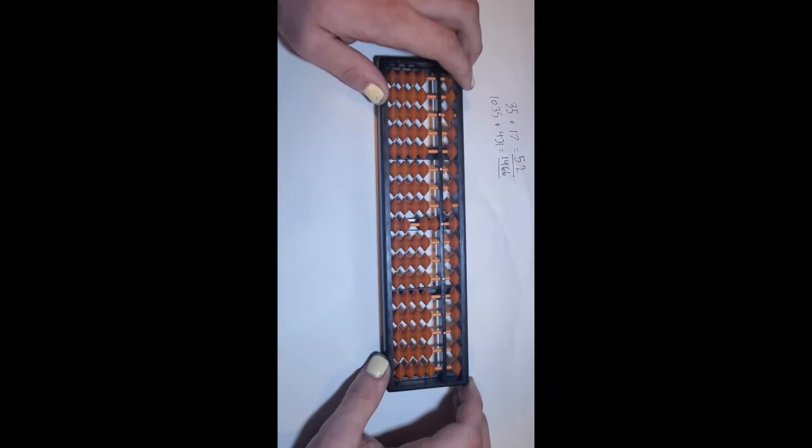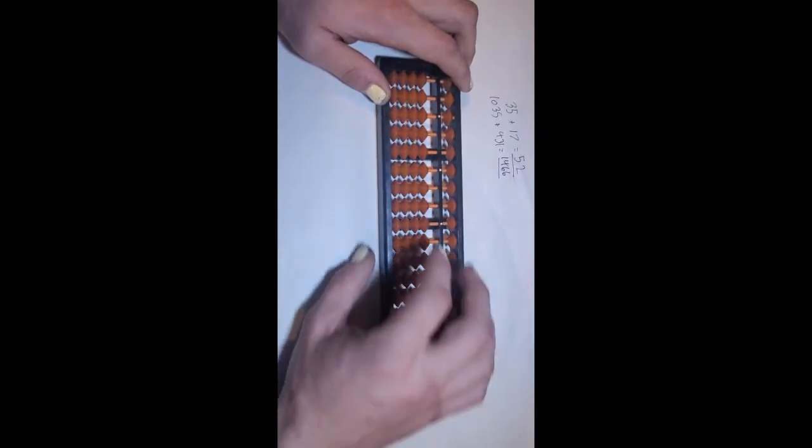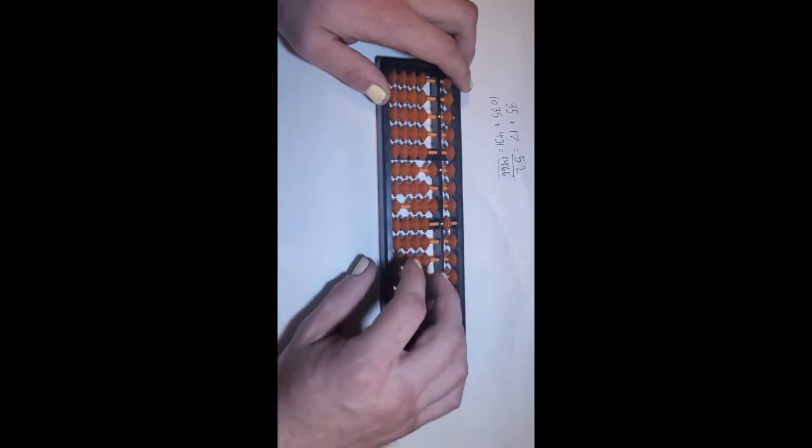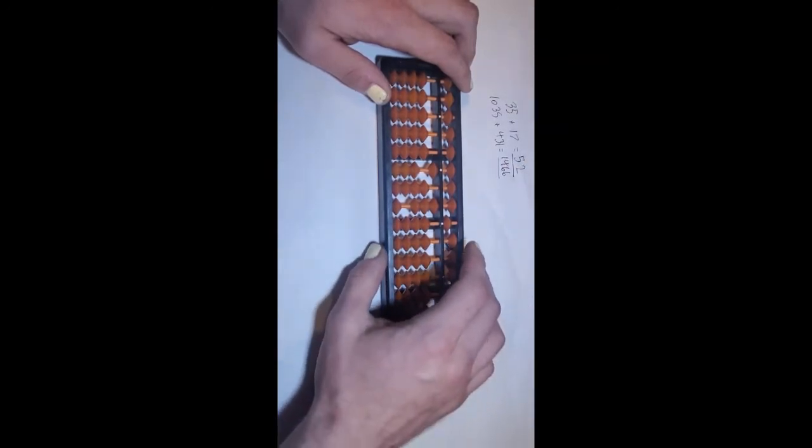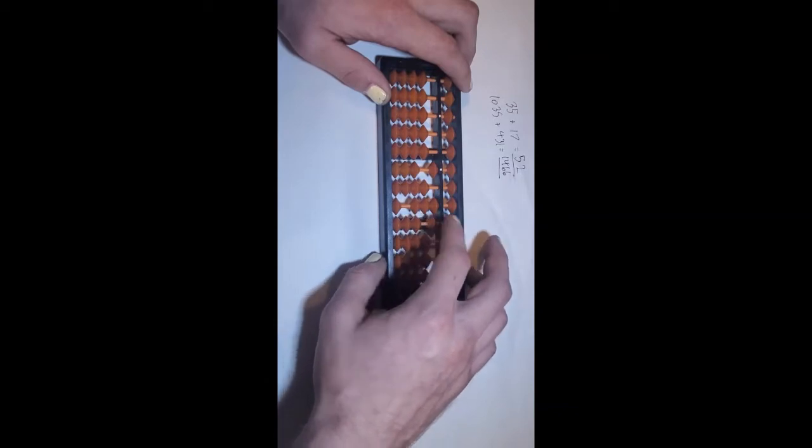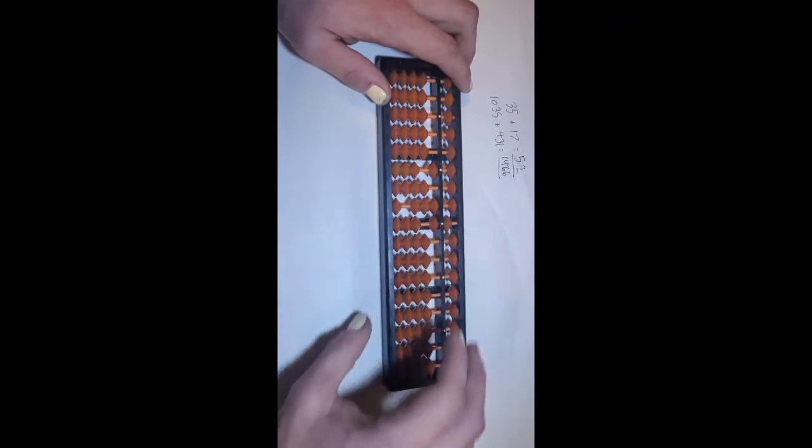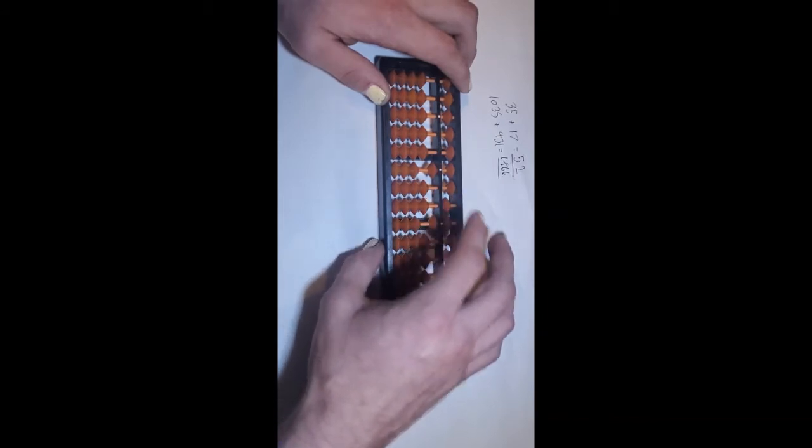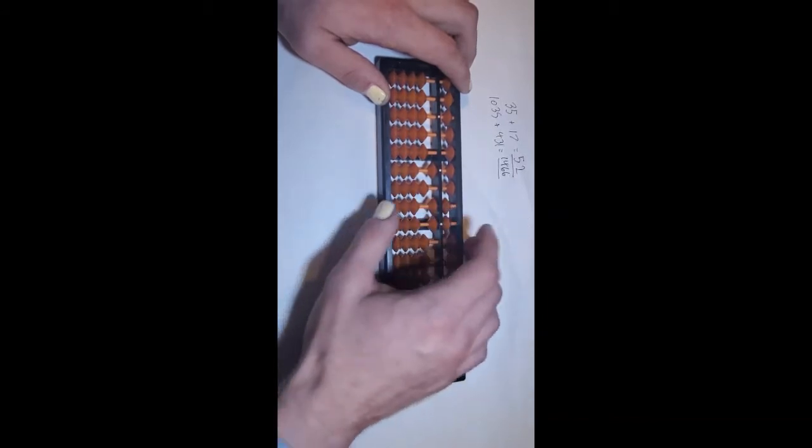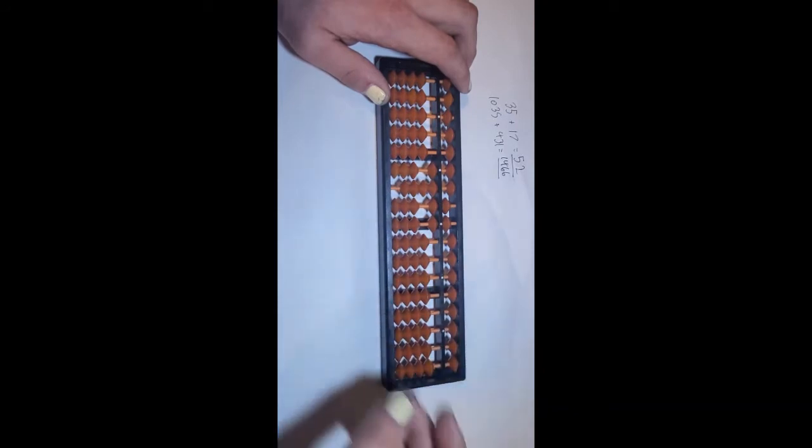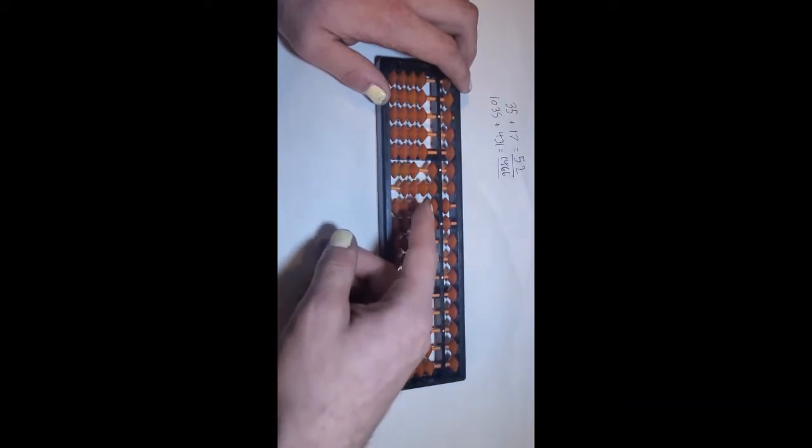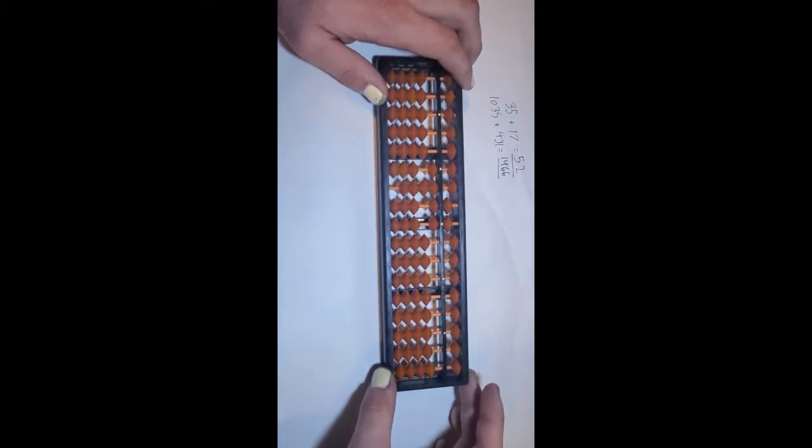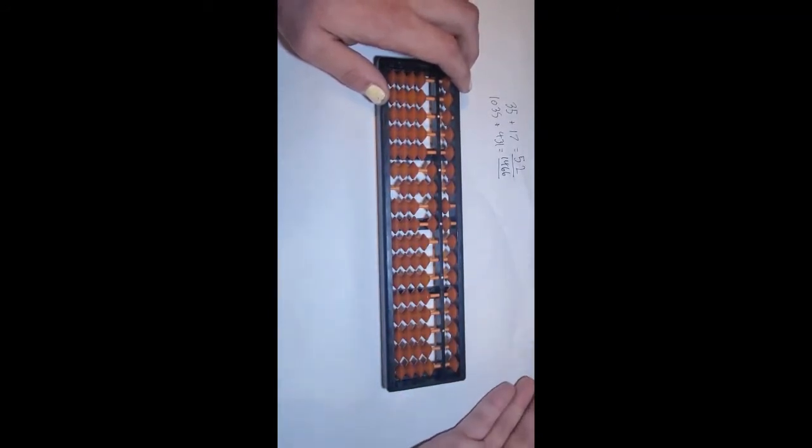See that right there. So let's do another one. Let's do 1035 plus 431. So the way we do that is we add one to the ones column, and then we add three to the tens column. So one, two, three. And then we add four to the hundreds column. And we're left with our answer, which is 1,466. It's very simple. You just add the numbers together physically on the Soroban, and then you just read off the numbers at the end as your answer.